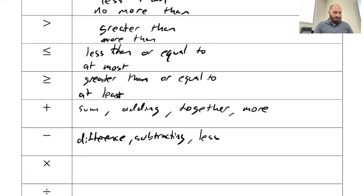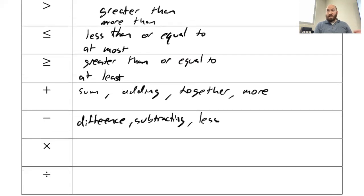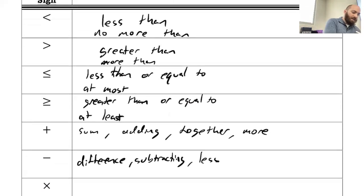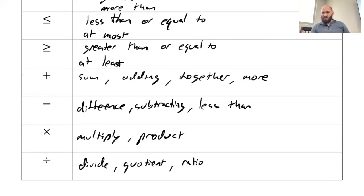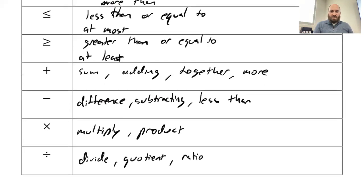Less, same idea as less than. There's a difference between saying that x is less than 5 and 5 less than x. So we got multiplying, got product, that comes up. Divide, quotient. Sometimes you'll see with division, you'll see like a ratio that'll pop up because that creates a fraction.